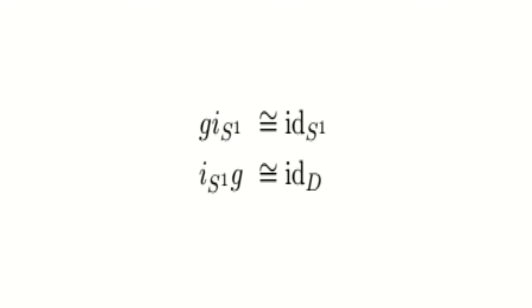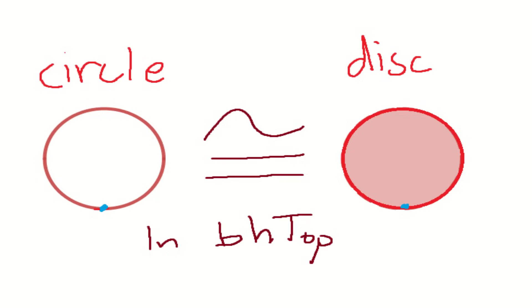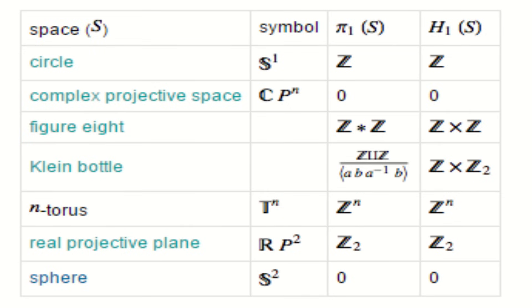Therefore, G gives us an isomorphism between the circle and the disk in the base homotopy category. This seems fine. However, this is actually not fine.